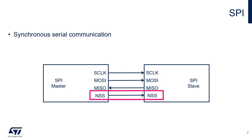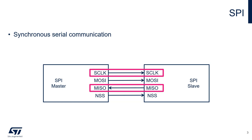And an NSS line used by the master to select the device to communicate with in the scenario of a multi-slave bus. For the purpose of PDM microphone acquisition, the SPI is used in master mode and only two lines are adopted: the clock line to provide the timing signal to the microphone and the MISO line to read the PDM data.